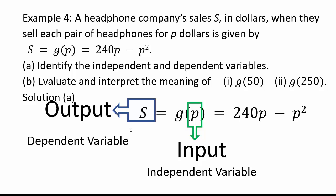Don't just move on. Look very carefully where all the different places the input appears. 240 times P minus P squared. Those are two different places that we have input appearing. Which means that if I want to evaluate g of 50, I'm going to have to replace all my inputs with 50.